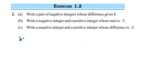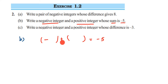Now let's move on to the second question. Write a negative integer and a positive integer whose sum is minus 5. Here we're doing addition — adding a negative integer and a positive integer so that the answer is minus 5. We're adding integers with different signs and the answer is minus 5. When you add integers with different signs, you subtract them and put the sign of the greater number. Since the final answer is negative, the greater number should have a negative sign.